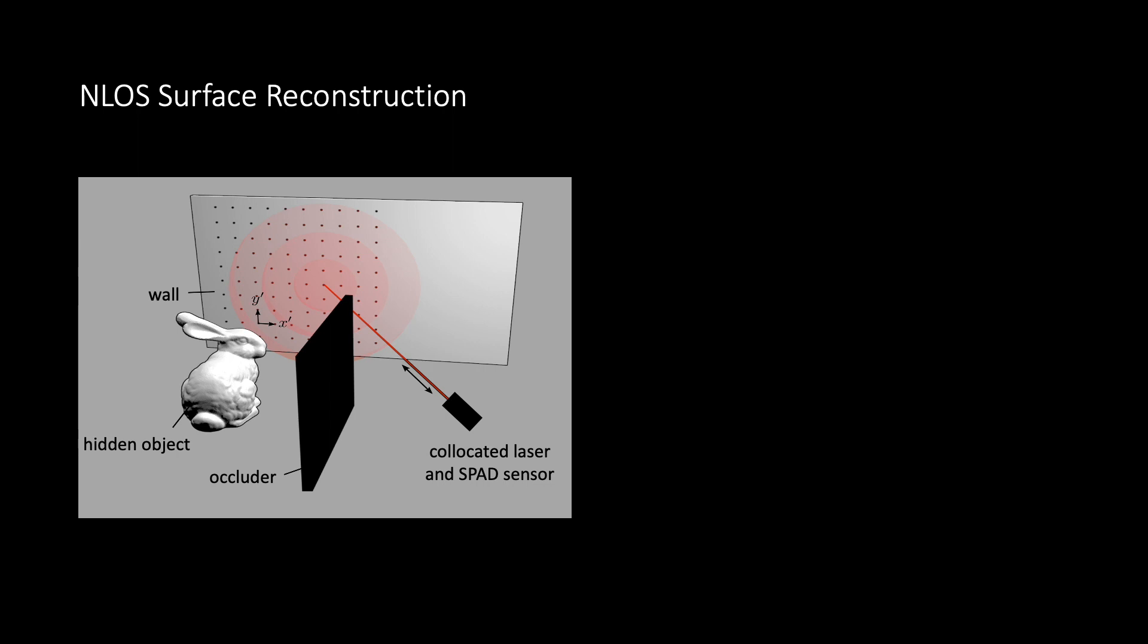This challenging problem can be solved using time-of-flight imaging systems with highly sensitive photodetectors and ultra-fast pulse lasers. The sensor measures the time it takes for a laser pulse to propagate to a wall, around the corner to the hidden object, and back. Reflected photons from each object are captured by the sensor over time, and by scanning multiple locations on the wall, the hidden object can be recovered.